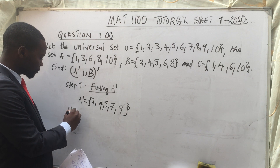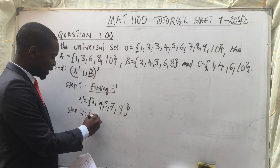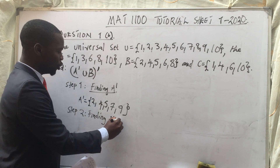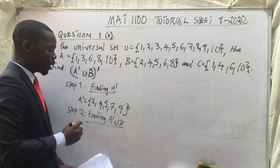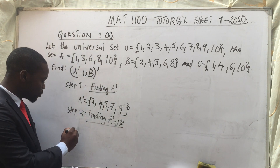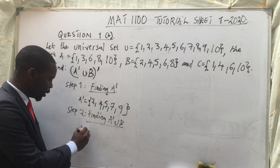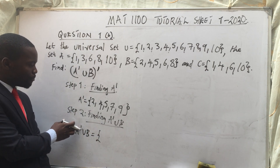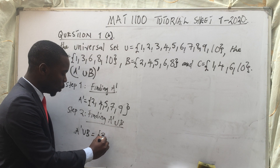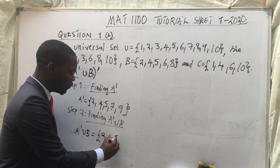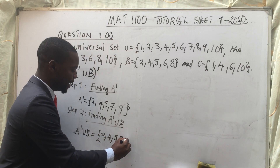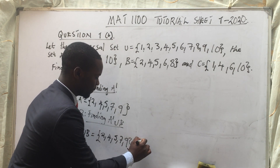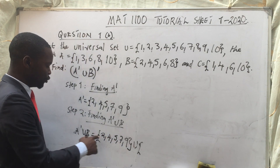Step 2: we are going to find A complement union B. So the set A complement we have calculated is {2, 4, 5, 7, 9}, and we now union it with set B.